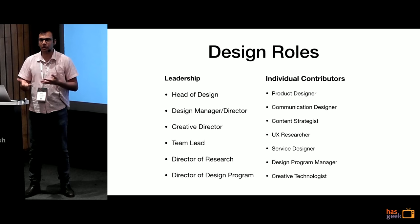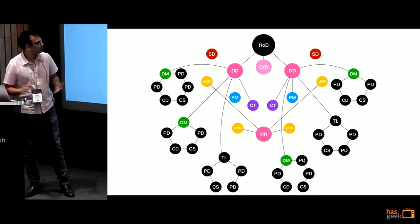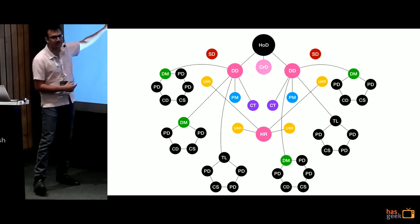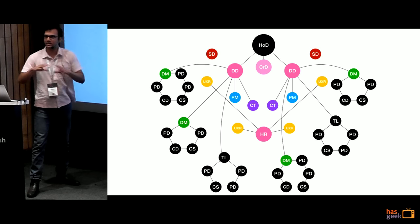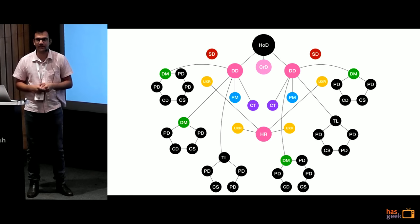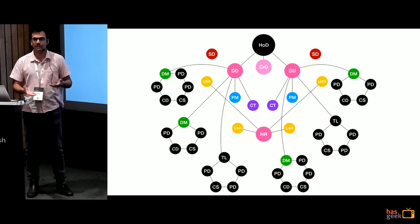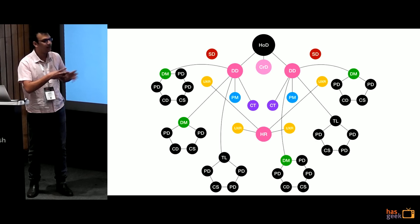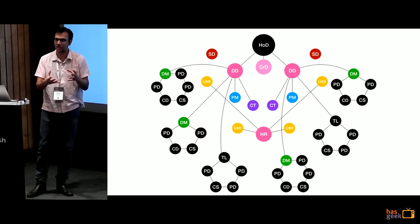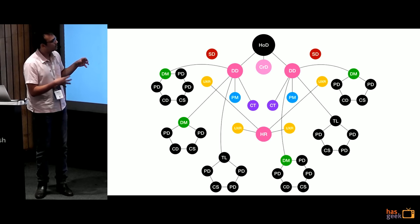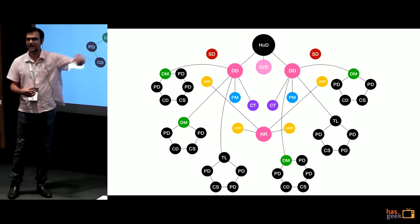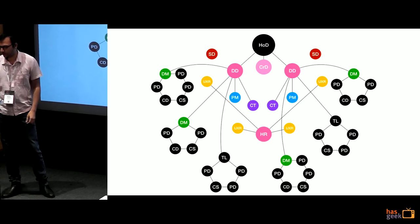Depending on your needs and organization this will look different — if you have lots of physical events, maybe more communication designers; if you do more digital stuff, maybe more product designers, teams of six rather than five. The key thing I'm trying to talk about is the support you need at different levels as you grow your team along this path.